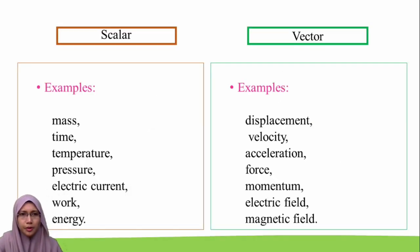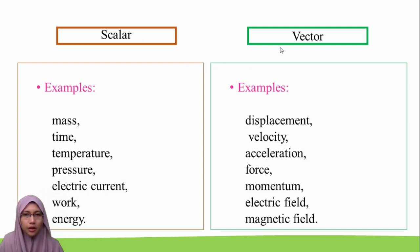Here are examples of scalar and vector quantities. Scalar quantities include mass, time, temperature, pressure, electric current, work, and energy. Vector quantities include displacement, velocity, acceleration, force, momentum, electric field, and magnetic field.